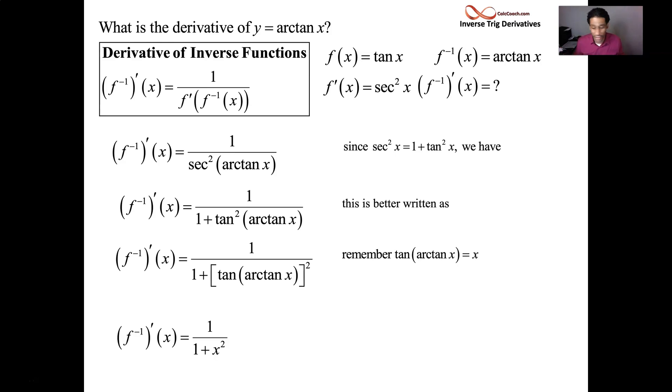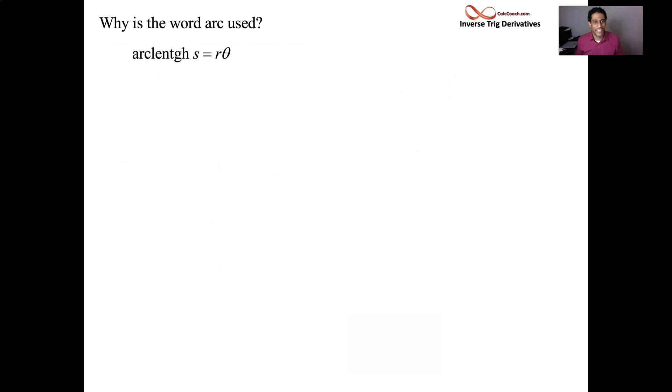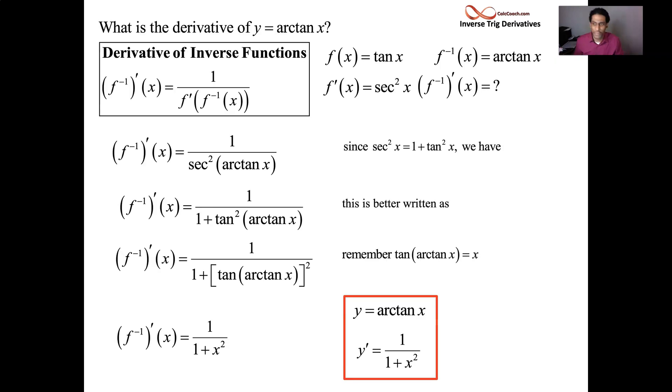The derivative of arctan is 1 over 1 plus x squared. Different than arc sine and arc cosine because they had the radical in there. This is how it comes out from our analysis here. So if your function is arctan, your derivative is 1 over 1 plus x squared. And now you know why. And of course, most questions aren't just this. They'll be the chain rule version of this. Arctan of another function. Its derivative, 1 over 1 plus that function squared times the derivative of that function. Let's see an example. Oh, no example? Sorry, no example. But you'll have plenty of examples if you look up the problems that I gave you.